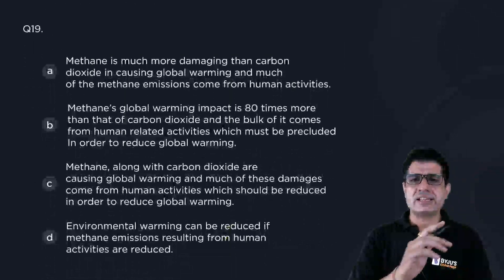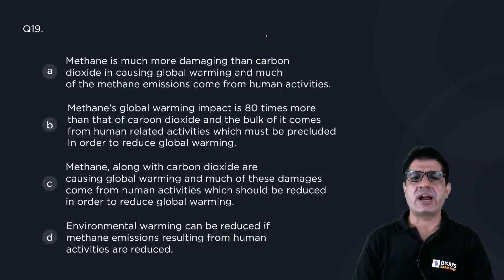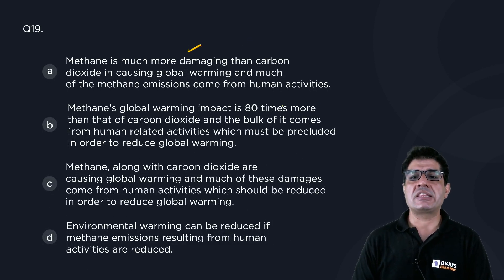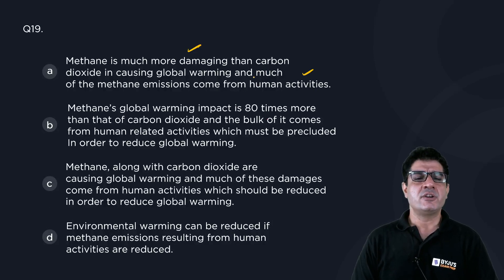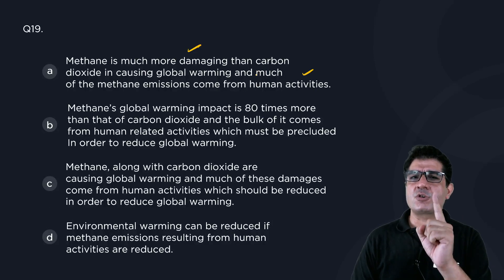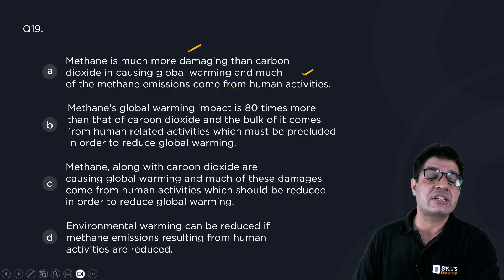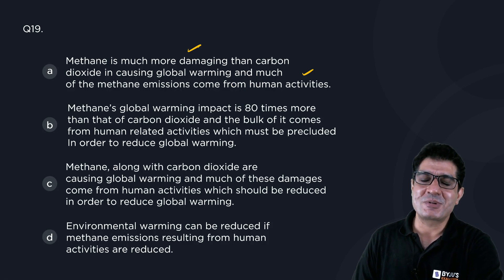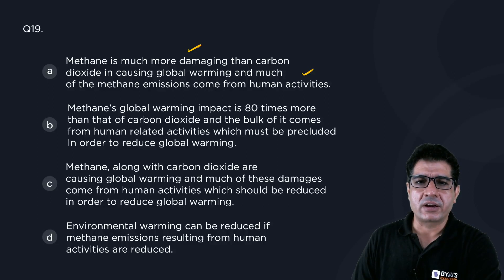Let's look at the options. Option A: methane is much more damaging than carbon dioxide in causing global warming, and much of the methane emissions come from human activities. But it is incomplete — it misses out on one idea: reducing those human activities in order to curb global warming.